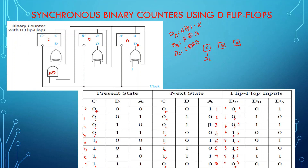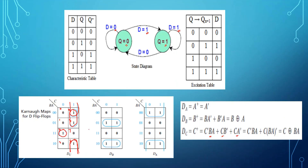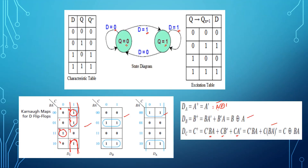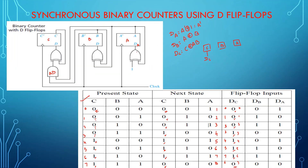This table, the equations, and the K-maps are very important. Once these equations are with you, you can design the circuit. As per the equations, the circuit diagram has been drawn. This finishes the design of a synchronous binary counter using D flip-flops. Thank you.